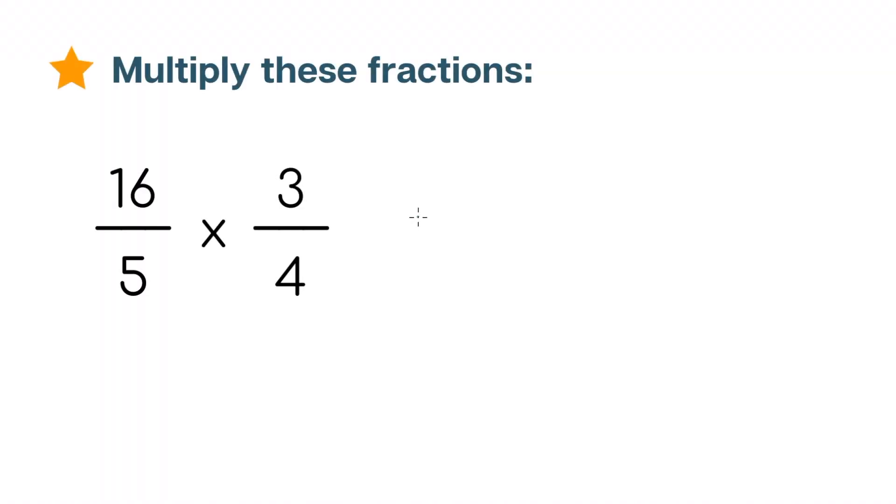Okay, let's do another one but with bigger numbers. 16 over 5 times 3 over 4. This looks like a nightmare of a problem but instead of trying to multiply 16 times 3 over 5 times 4, we can actually use something called cross-cancellation to make this problem a lot easier.